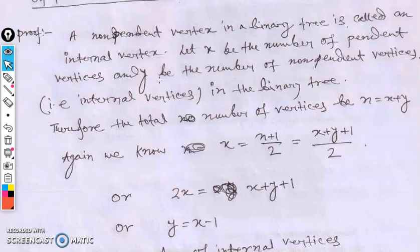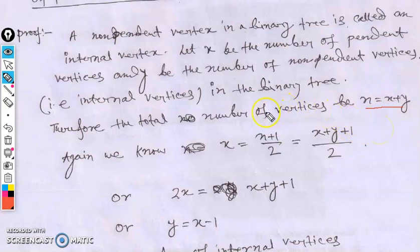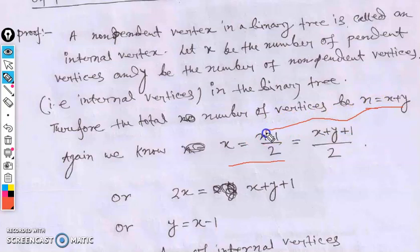So n = x + y. From the previous theorem, the number of pendant vertices x = (n+1)/2. We substitute n = x + y into this formula, giving x = (x + y + 1)/2.